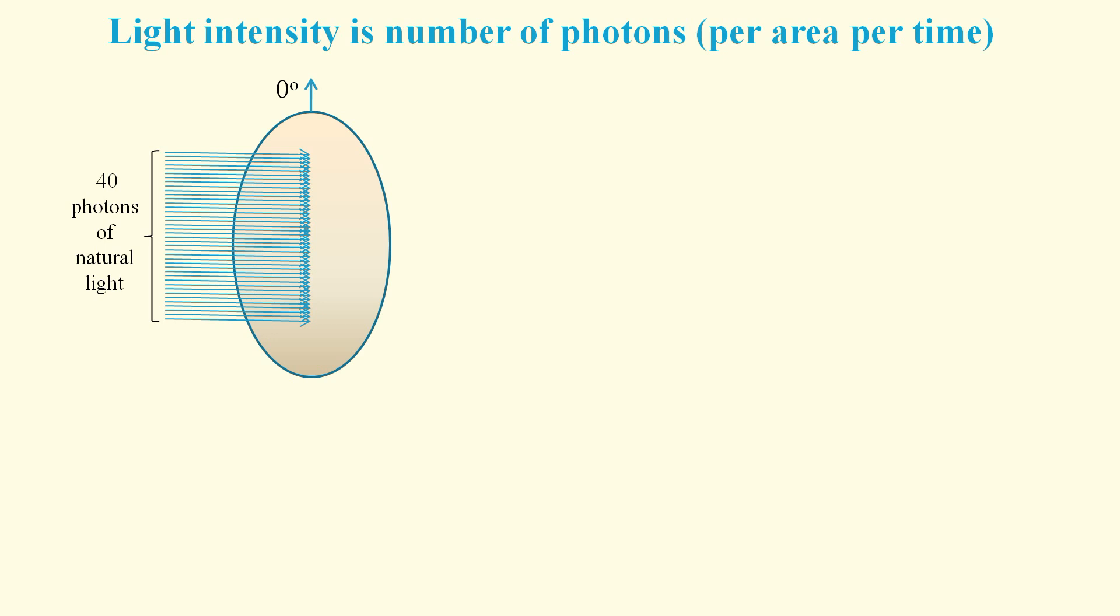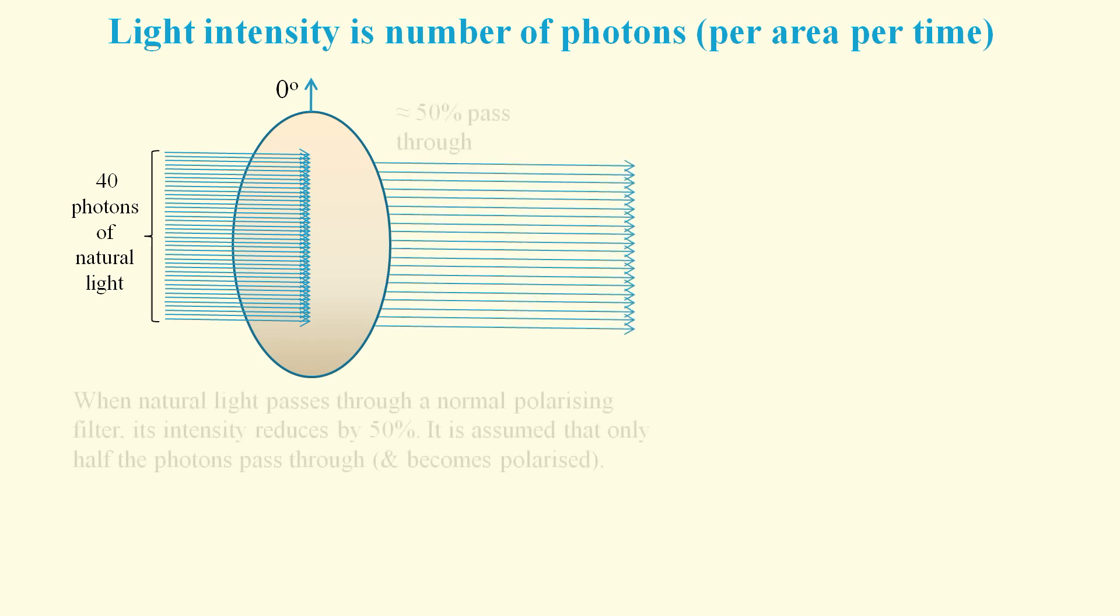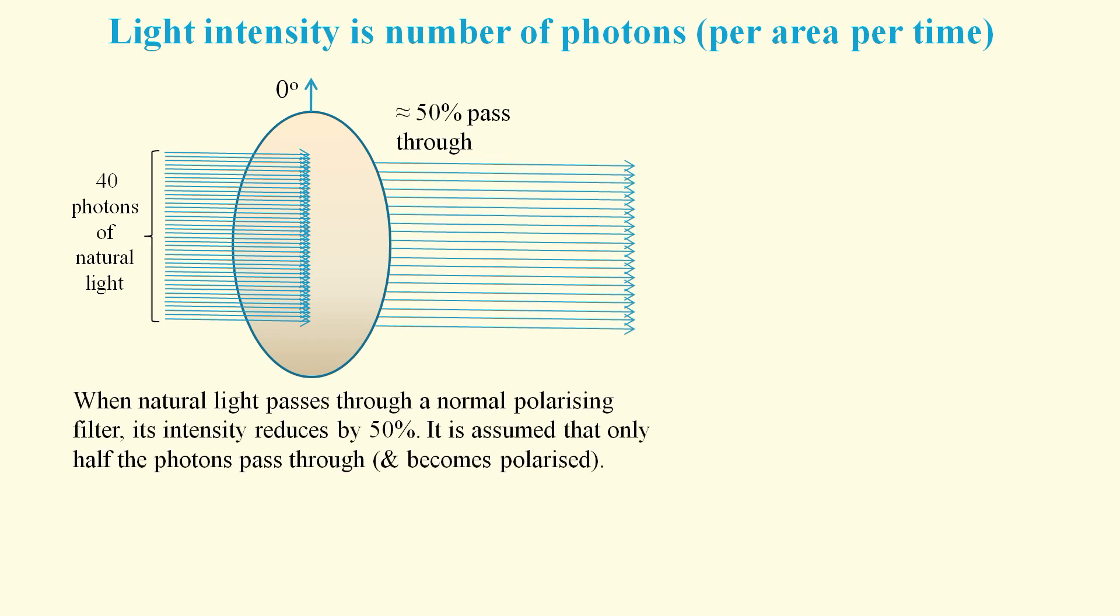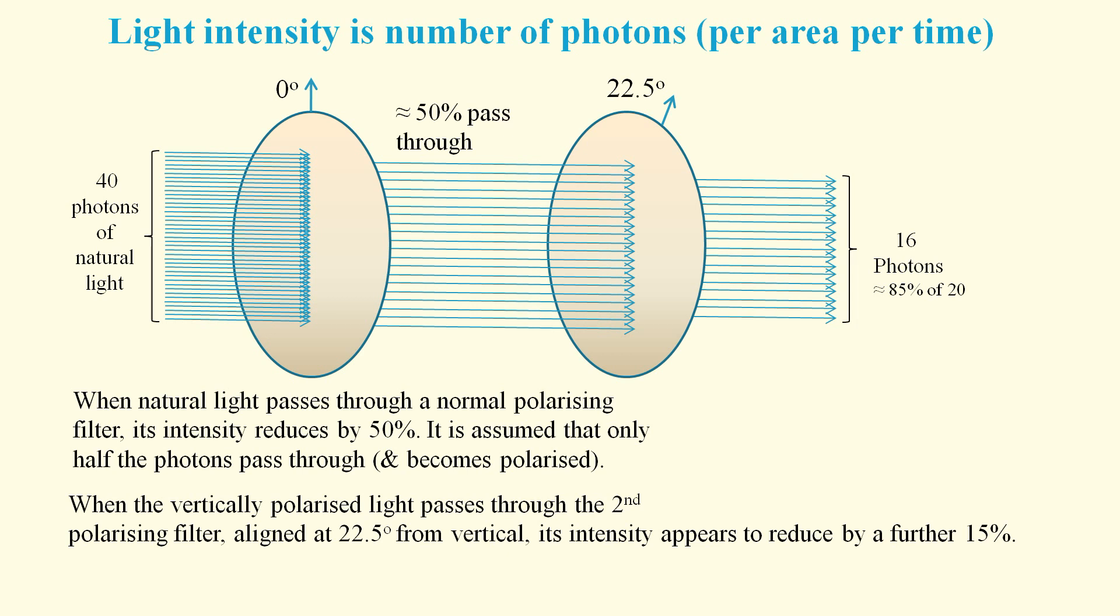First, consider natural light passing through a polarizing filter. The filter reduces the intensity of the light by 50 percent, and the natural assumption is that only half the photons manage to pass through. So if we then add a second filter where there's an angle of 22.5 degrees between the filter alignments, then the intensity reduces by a further 15 percent, and again we assume that some photons fail to pass through the second filter.